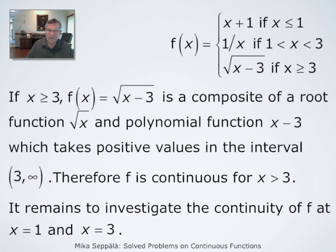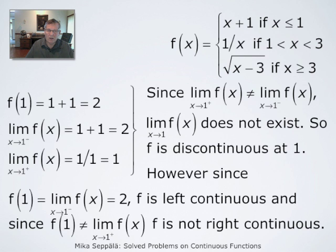The left-hand limit of f at x = 1 equals the limit of x + 1 as x approaches 1, which is 2. The right-hand limit of f at x = 1 equals the limit of 1/x as x approaches 1 from the right, which is 1/1 = 1. These one-sided limits do not agree; therefore f does not have a limit at x = 1, and it is discontinuous there. It is neither right nor left continuous at x = 1.